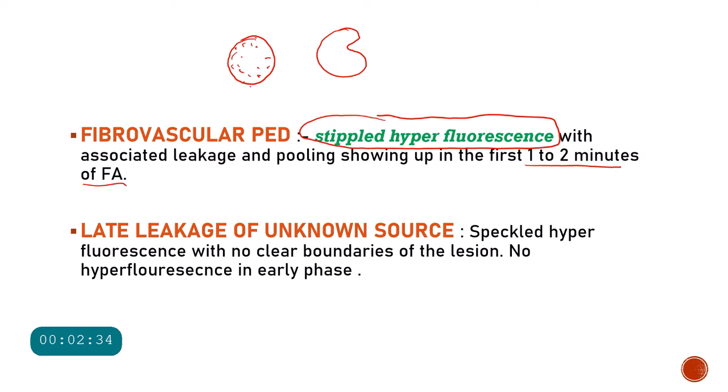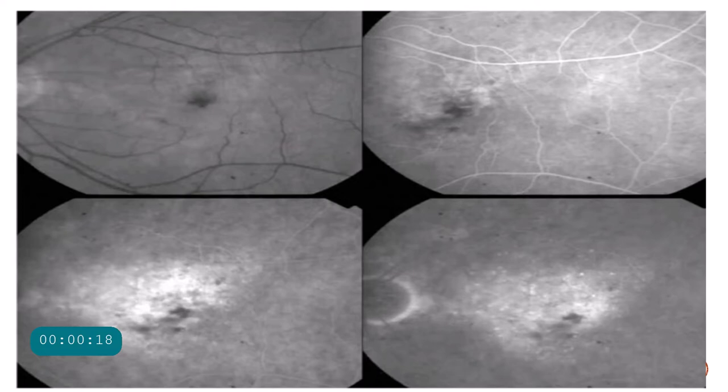The late leakage of unknown source is also a type of occult CNVM, but it is less common compared to the fibrovascular PED. In late leakage of unknown source, we do not see any hyperfluorescence in the early phase; only in the late phase do we see certain speckled hyperfluorescence, and that too will not have any clear boundaries.